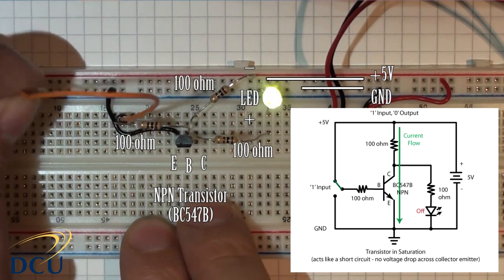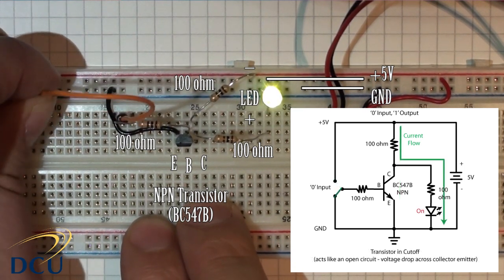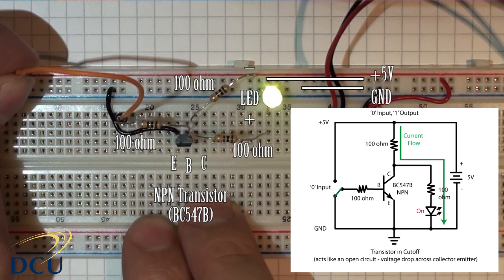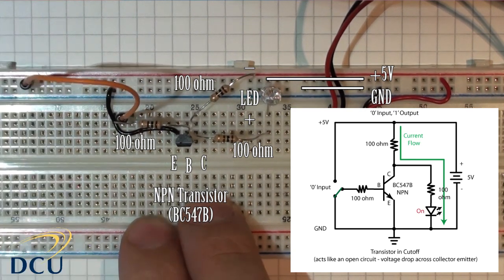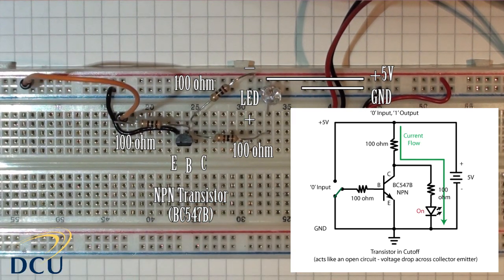Again, for an input of zero we get an output of one, and for an input of one we get an output of zero. This behaves exactly like you would expect an inverter to behave.